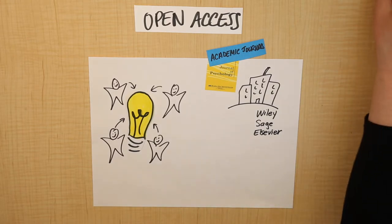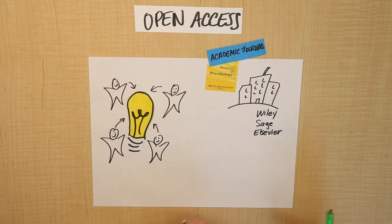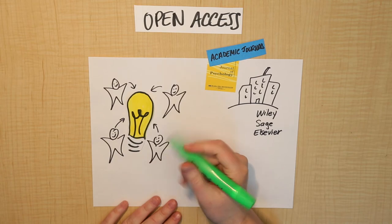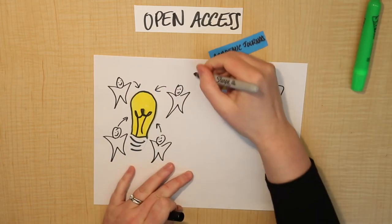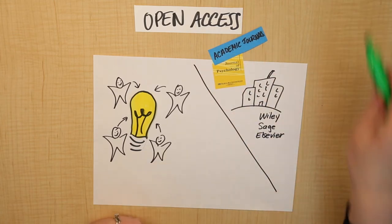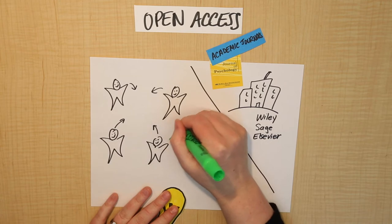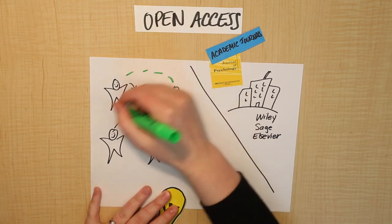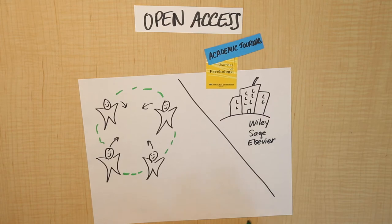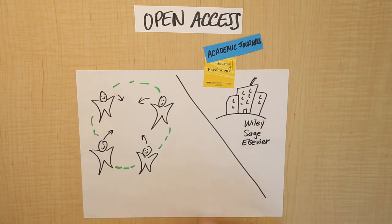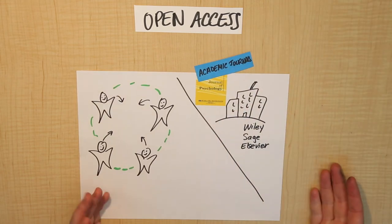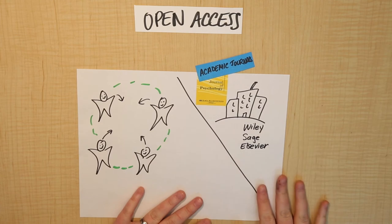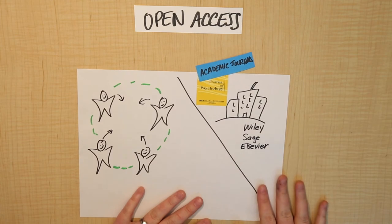Open access — the idea behind that is that it kind of cuts out the traditional publisher, and instead it involves this sort of open and free sharing of information on the web. Open access journals are a really great thing to know about if you're doing research at a more intermediate level, because it expands out your options for what you can access.